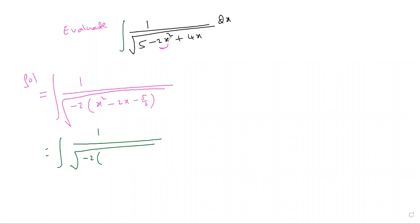First step, what we did: we have taken minus two common. Now here, make it a perfect square. x² - 2x means 2 times x times 1.